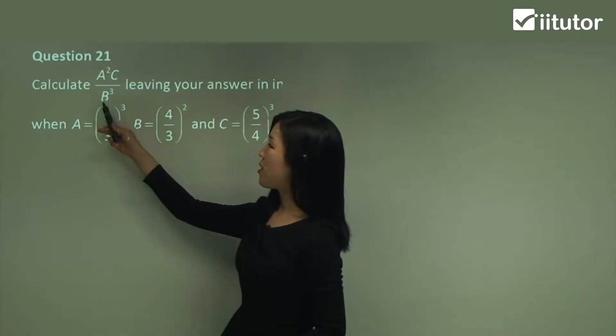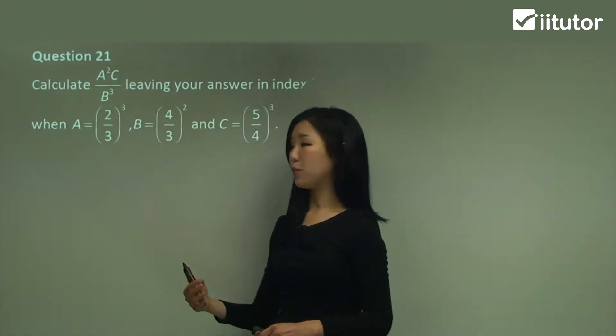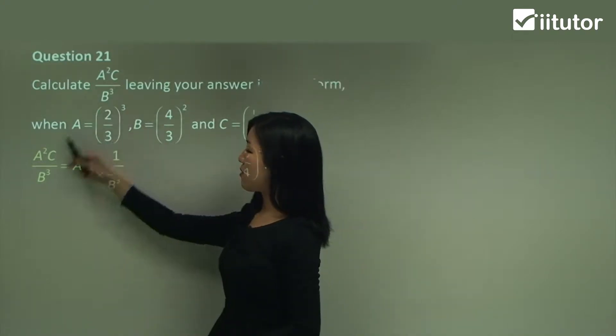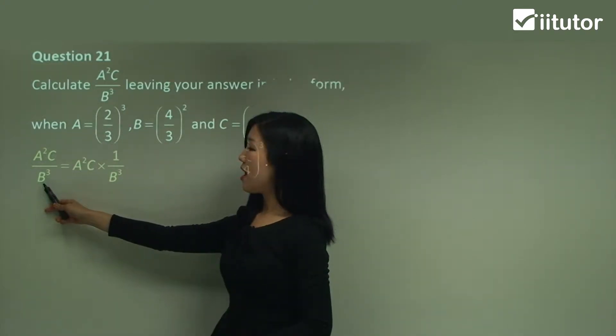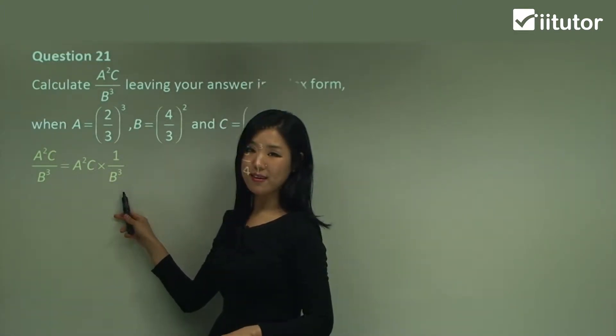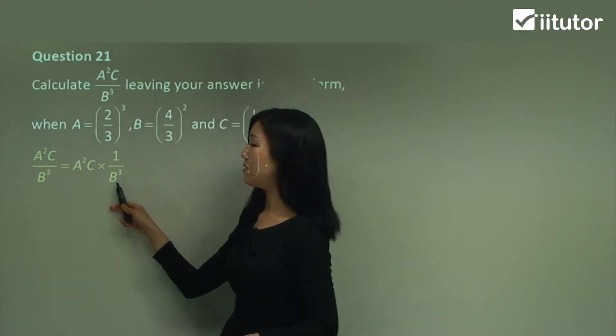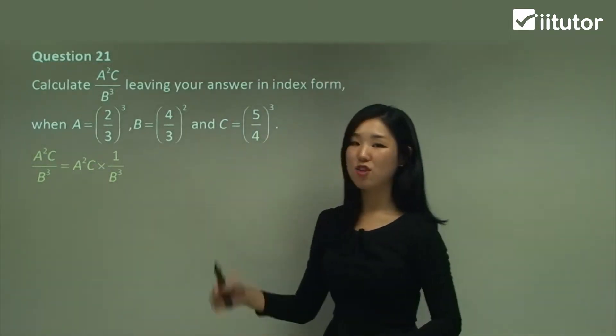Now what I'm going to do first is try to manipulate our given expression, so I can make it a little bit more simple. So our given expression there, our fraction, I'm going to try to separate it out. So I'm going to separate the numerator with the denominator. So that becomes something like this. Make sense? And then now I can insert it in.